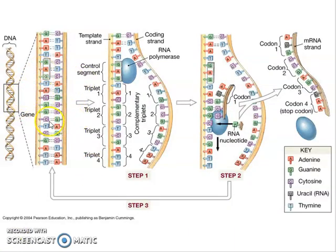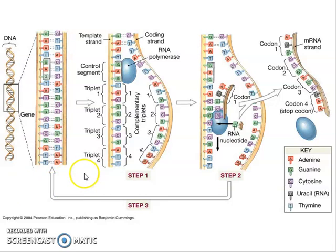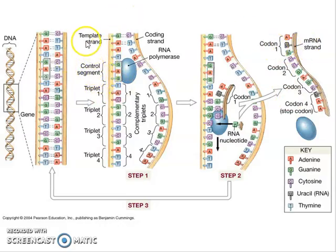Now let's look at transcription more closely. Occurring in the nucleus, we can see that our gene is a segment of DNA, with complementary bases: guanine always with cytosine, adenine always with thymine. There's no uracil here because uracil is part of an RNA nucleotide, and DNA is only made of DNA nucleotides. When a cell signal activates a gene, an enzyme goes to the initiator control segment, unwinds the DNA, breaks the hydrogen bonds, and starts reading the first three codes — called triplets. Three-base sequences on the template strand are called triplets; what's complementary to the template strand is the coding strand, so what's complementary to the triplets are the complementary triplets.